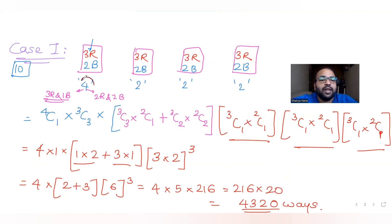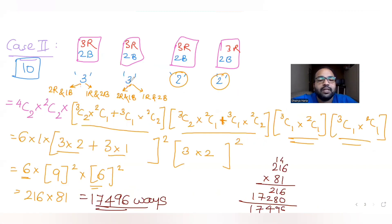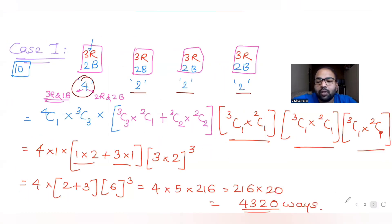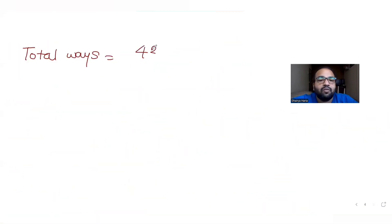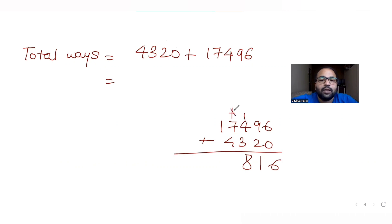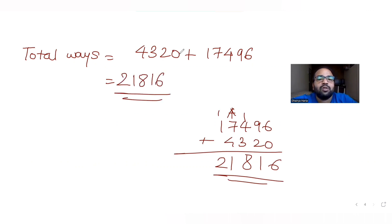In Case 1 I selected four balls from one bag and two from each remaining three boxes (4320 ways). In Case 2 I selected three balls from each of two bags and two from each remaining two boxes (17,496 ways). Apart from these two cases there are no others, so the total number of ways = 4320 + 17,496 = 21,816 ways.